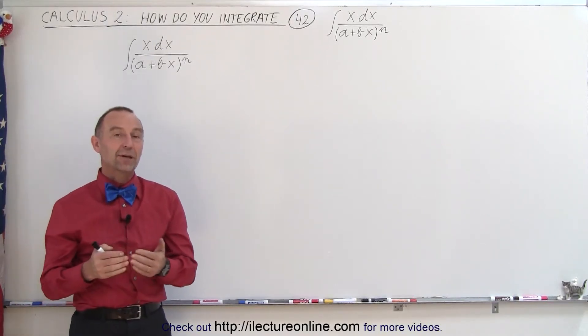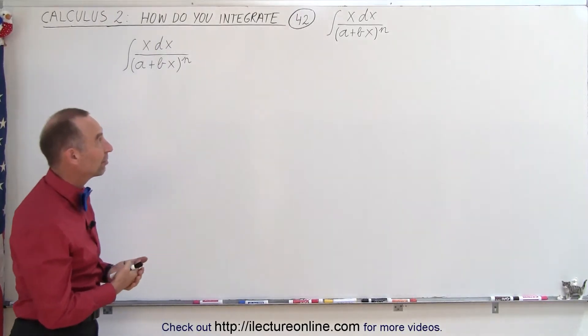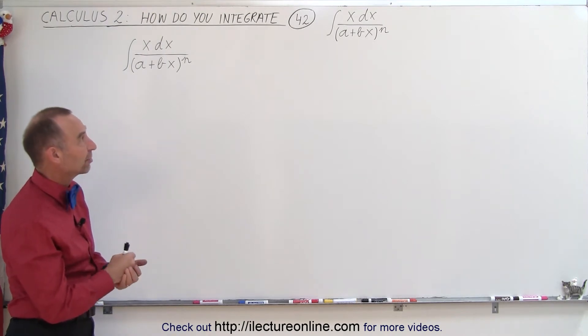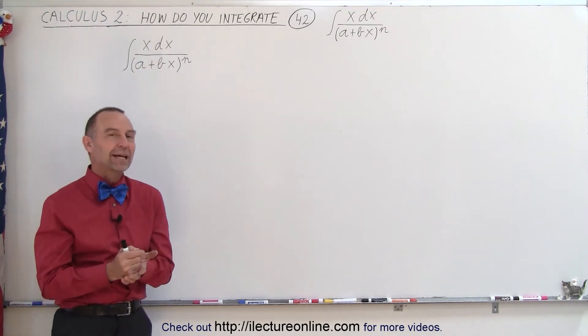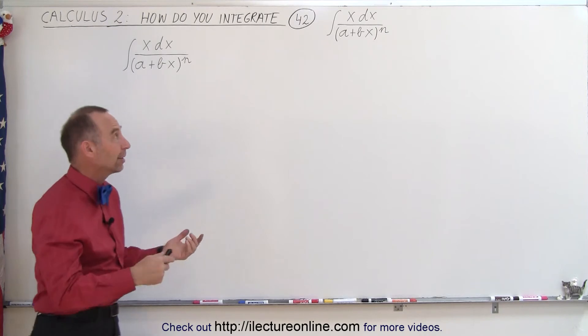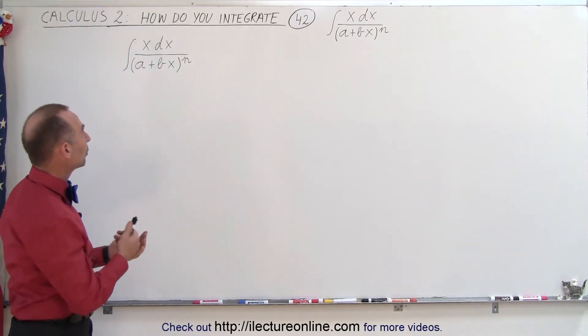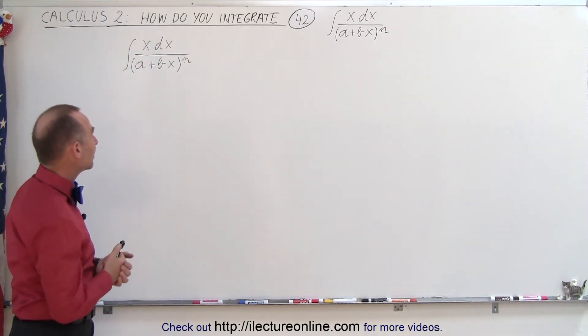Welcome to Electron Online. Now here's our more general case of an integral of x dx divided by the quantity a plus bx to the nth power. n can be any integer greater than 1. And so how do we integrate this?